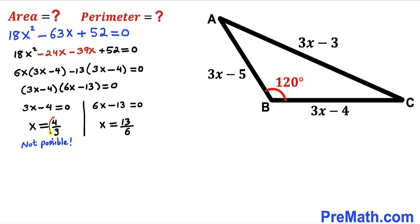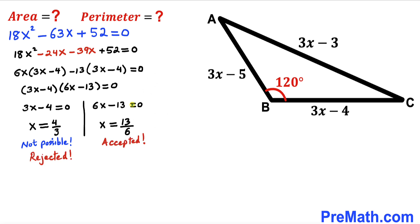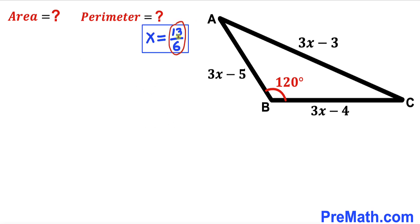Separating the two factors gives x equals 4 divided by 3, or x equals 13 divided by 6. The value x equals 4/3 is not valid: substituting gives 3 times 4/3 minus 5, which equals 4 minus 5, which equals negative 1 — and a side length cannot be negative. So we reject x equals 4/3 and accept x equals 13/6.